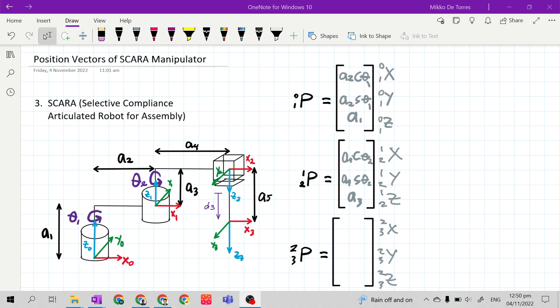Okay, and we already derived the P01 and P12. The only thing left is P23. Okay, so this is very easy because the last joint is a prismatic joint.